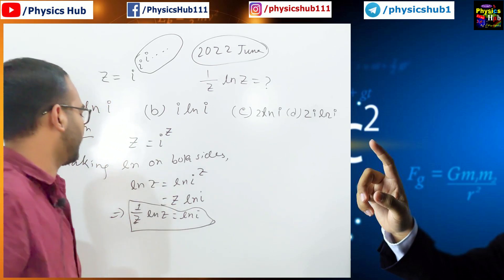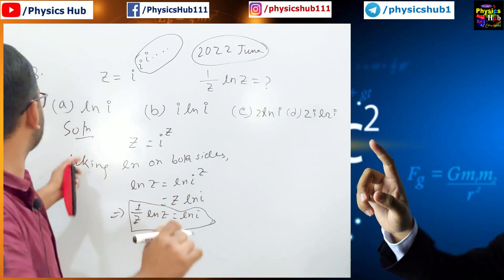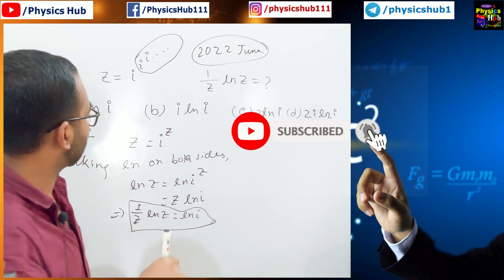This is so simple. I think this 3.5 marks is not justified for this simple problem. One of the options is matching with this. Option A is matching correctly with this. Option A is the correct option.